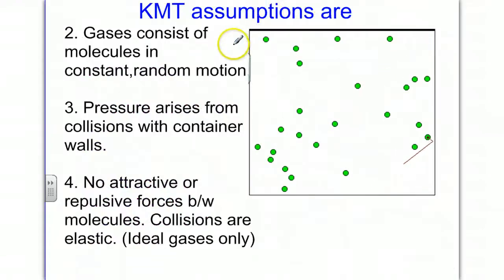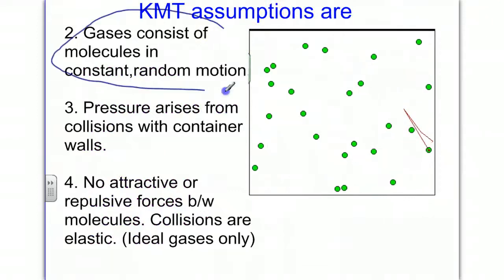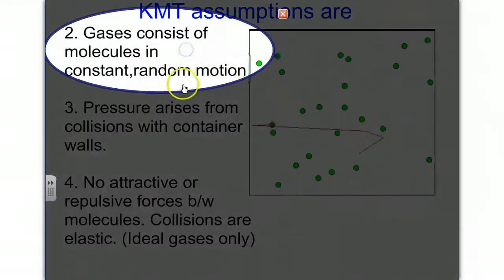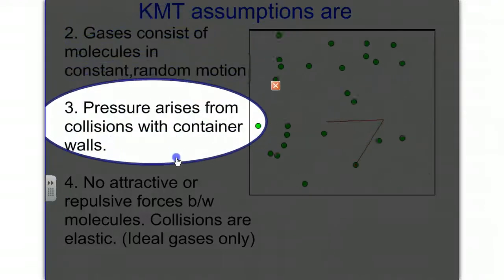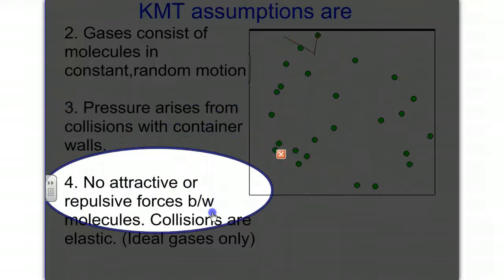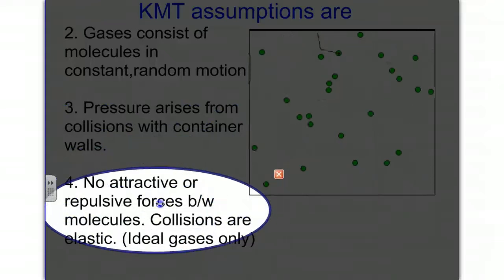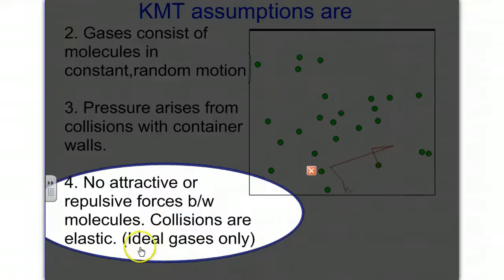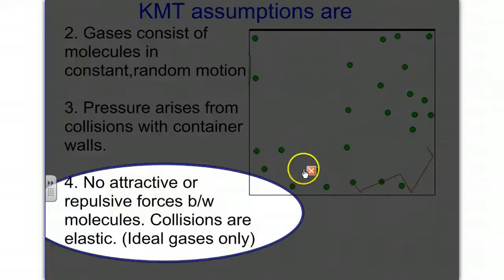The kinetic molecular theory has several other assumptions. Assumption number two: gases consist of molecules in constant random motion. Assumption number three: pressure arises from collisions with the container walls. They have elastic collisions, which means no net loss of kinetic energy. And number four: there are no attractive or repulsive forces between molecules, and collisions are elastic. This is only true for ideal gases, because a real gas actually does have attractive and repulsive forces between them.